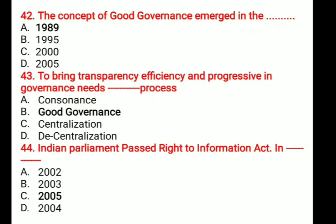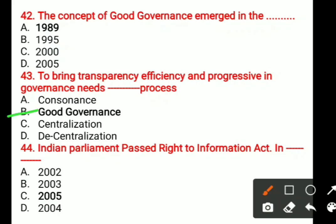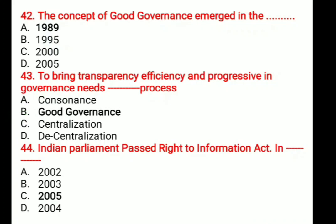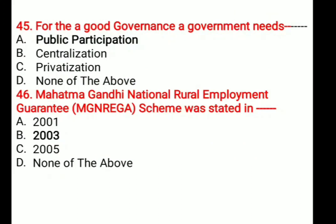Question number 43: To bring transparency, efficiency and progress in governance needs blank process. Options are: A. Consonants, B. Good Governance, C. Centralization, D. Decentralization. The correct answer is Good Governance — if good governance is there, transparency is automatically there. Question number 44: Indian Parliament passed the Right to Information Act in blank year. Options are: A. 2002, B. 2003, C. 2004-5, D. 2004. The correct answer is 2005.